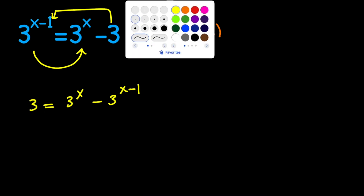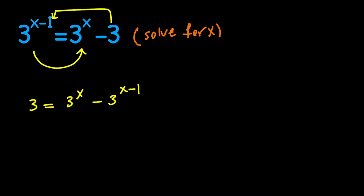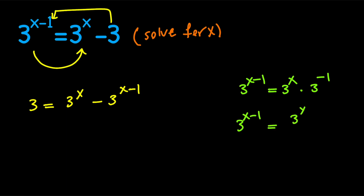Now, notice that 3 to the power of x minus 1 is equal to 3 to the power of x multiplied by 3 to the power of negative 1. Now, since 3 to the power of negative 1 is one-third, this equals 3 to the x divided by 3.